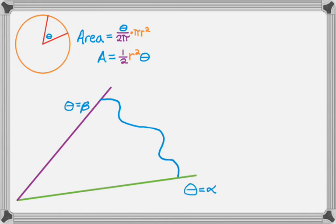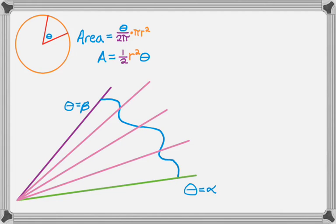So what I'm going to do is I'm going to divide up the region, so I'm going to create a Riemann sum, basically. So I've divided up the region, and each of these is a delta theta. So delta theta would be beta minus alpha over n, where n is the number of sectors that I'm cutting it into.